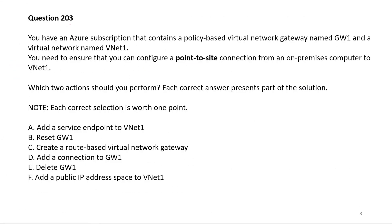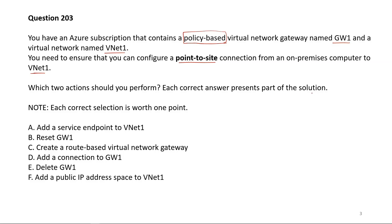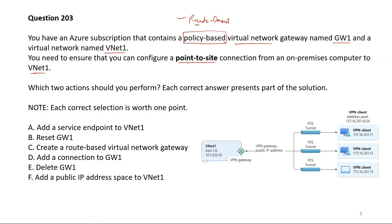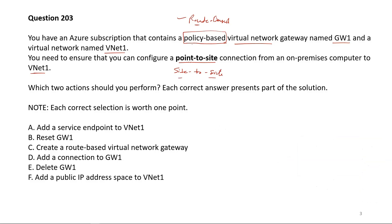Question 203: You have an Azure subscription that contains a policy-based virtual network gateway named GW1 and a virtual network named VNet1. You need to ensure that you can configure a point-to-site connection from an on-premises computer to VNet1. Which two actions should you perform? There are two types of virtual network gateways: policy-based and route-based. We need to configure a point-to-site connection, as opposed to site-to-site connectivity.